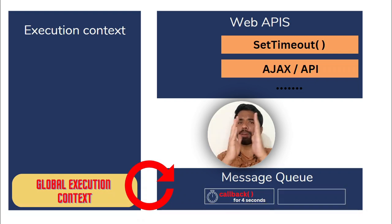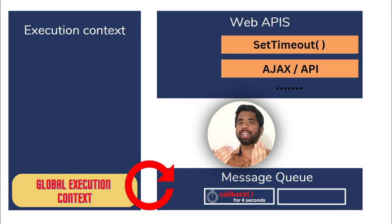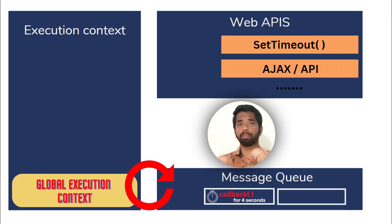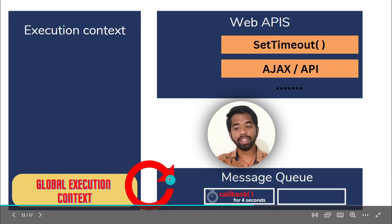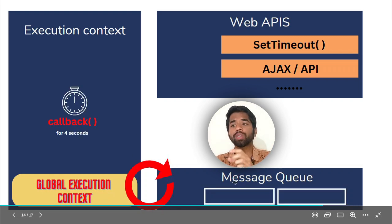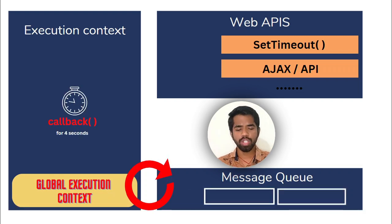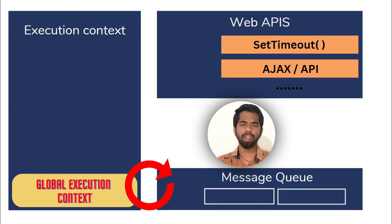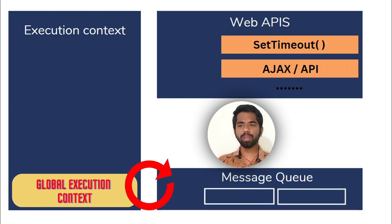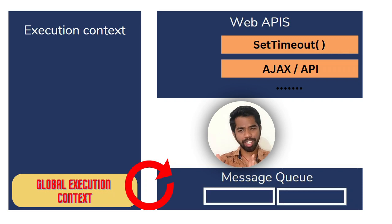This is the event loop. The execution context and the event loop work together. Once the callback is in the execution context it gets printed, then the execution context is cleared. You should be able to understand this. This is event loops — I'll cover this briefly. Event loops are part of how a particular program is executed in the global execution context.